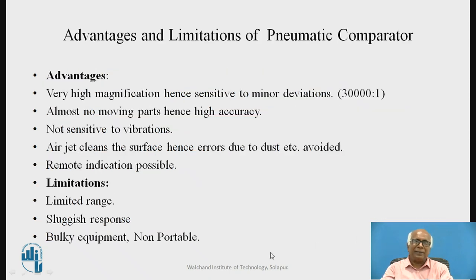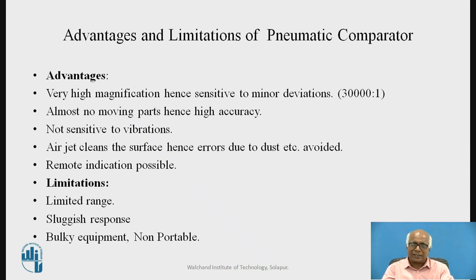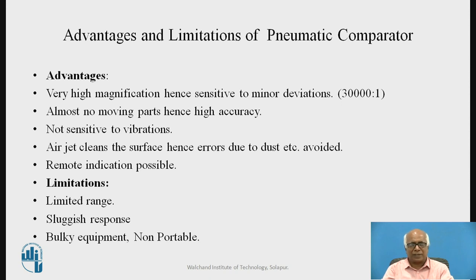Advantages of pneumatic comparators: very high magnification, making the comparator very sensitive to even minor deviations — the magnification range is 30,000 to 1. There are almost no moving parts in the comparator, hence very high accuracy, because there is no friction and no wear and tear. So over time, there will not be any loss of accuracy.